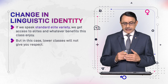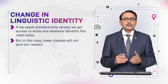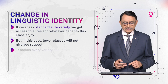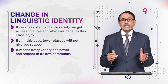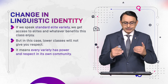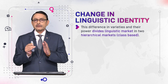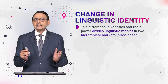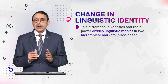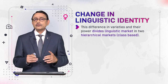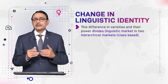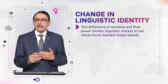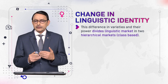However, in this case, lower classes will not value our choice of standard variety, because they value the variety spoken in their own community. This means every variety has power, value, and respect in its own community. Social class — whether middle, upper, elite, or working class — determines which variety is welcomed. This difference in variety and their power divides the linguistic market into two hierarchical markets, which are class-based because variety enjoys respect with reference to its class.